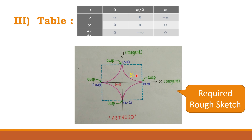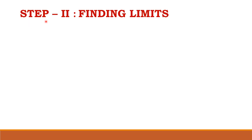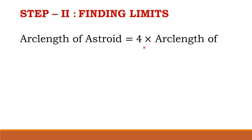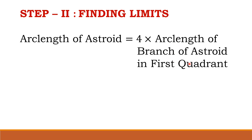Let us denote the arc length of the branch in the first quadrant as s1, arc length s2 for the branch in the second quadrant, and likewise s3 and s4. As we have symmetry about both coordinate axes, the arc length of each branch is the same. Therefore, the total arc length of the asteroid is s equal to 4 times s1.